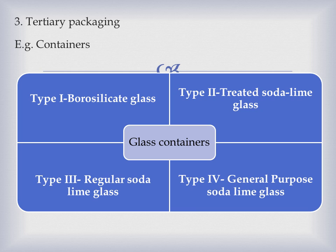We have two types of containers: glass containers and plastic containers. Glass containers contain four types: borosilicate glass, which is highly resistant and chemically inert glass; treated soda lime glass, which is more chemically inert; regular soda lime glass, which is untreated with average chemical resistance; and general purpose soda lime glass, which is not used for parenterals, only for oral or topical administration.